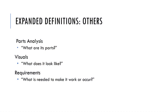There are additional expanded definition types. Parts analysis describes what the parts of an object are — especially helpful for technological items. Visuals can be very helpful too: even without a photograph, you can describe how something looks. Another category is requirements — describing what you have to have in order for something to work, which can be a great way to arrive at the definition of a particular word.